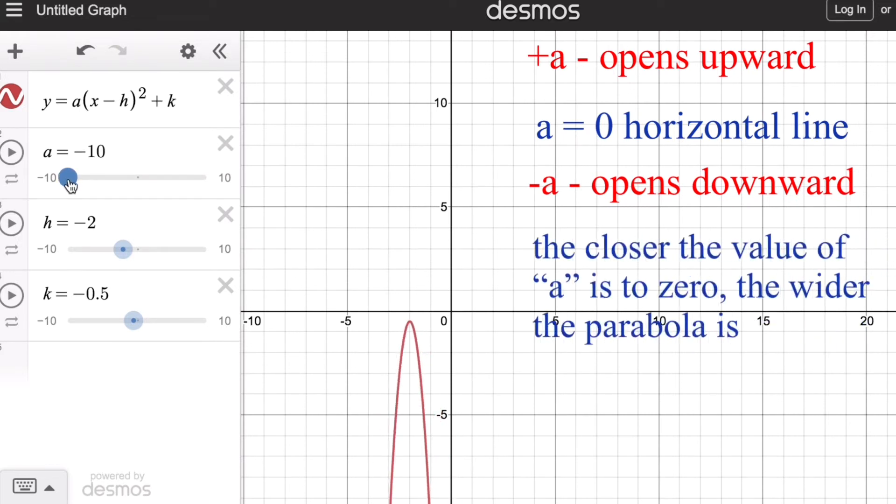Moreover, the closer the value of a is to zero, the wider the parabola is. Please notice that when we change the value of a towards zero, the wider it becomes until the graph becomes a horizontal line. This is true on the other side as well.